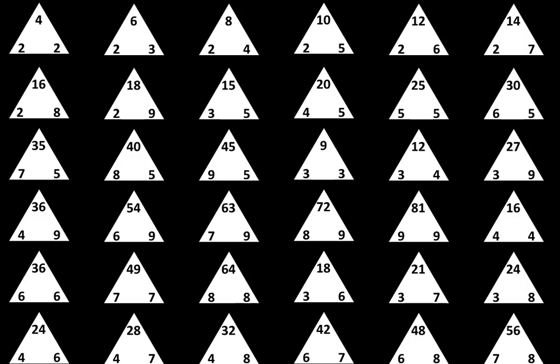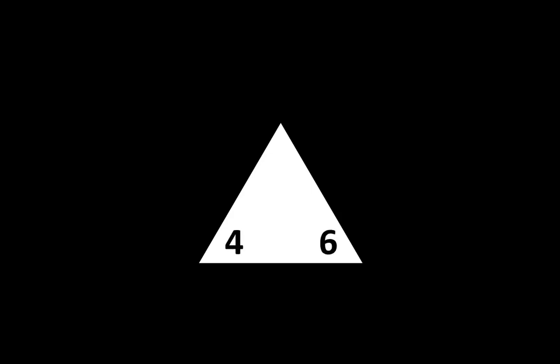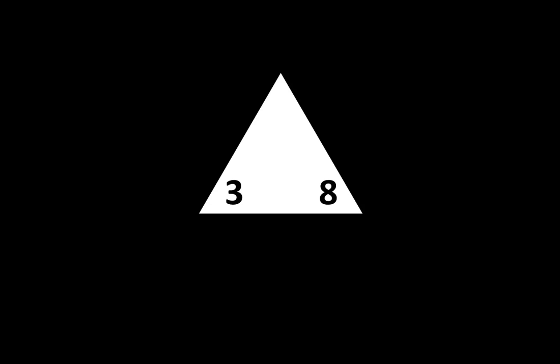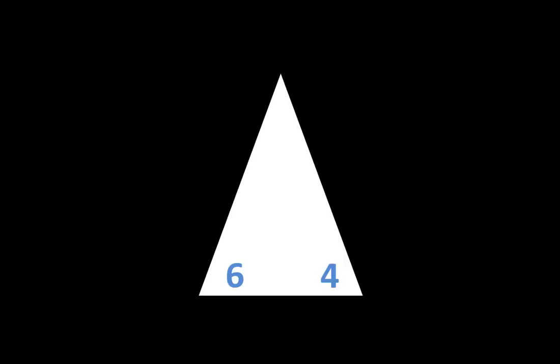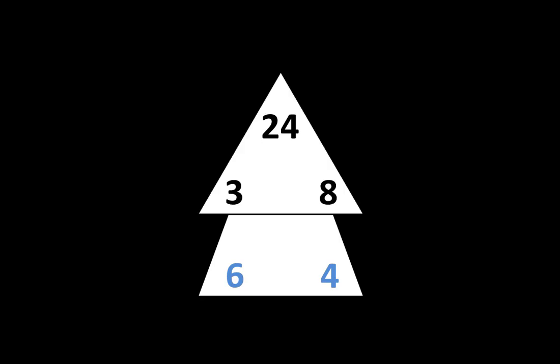Now you have completed all 36 triangles. In a moment you'll take a closer look at the triangles, and I encourage you to think about big ideas and strategies. For example, when you think about the product of 4 and 6, you can also think about the product of 6 and 4 — if you know that 6 times 4 is equal to 24, then you also know that 4 times 6 is equal to 24. Another tip is to try strategies like doubling and halving. If you aren't sure what 3 times 8 is, you can double 3 to get 6 and halve 8 to get 4, then multiply 6 times 4 to get 24 — so 3 times 8 is also equal to 24.